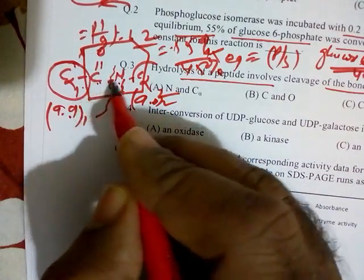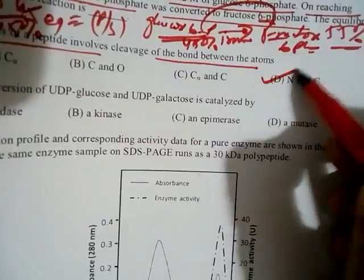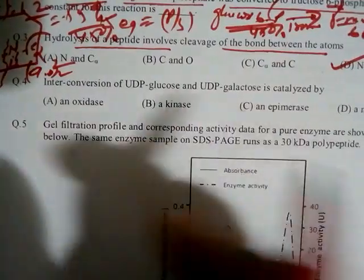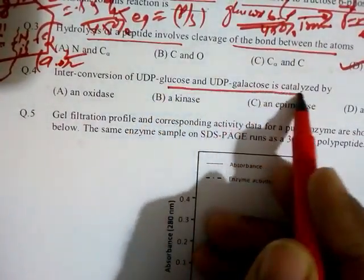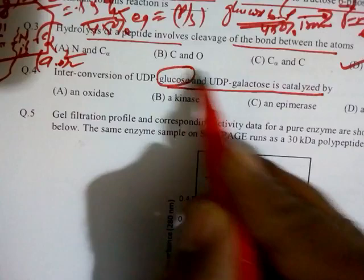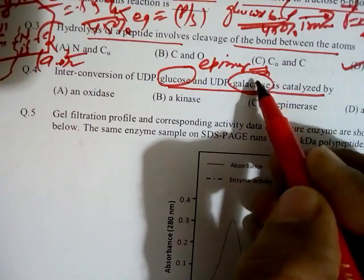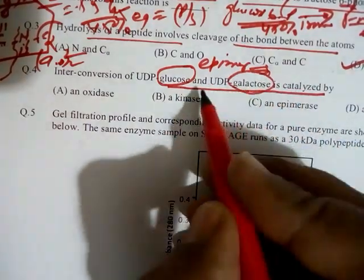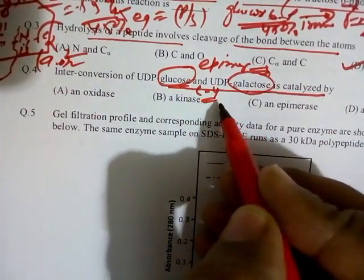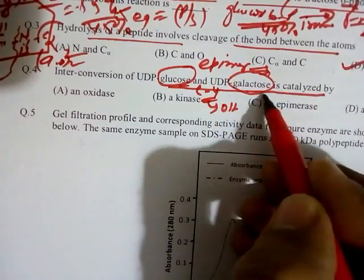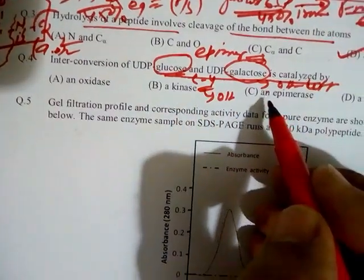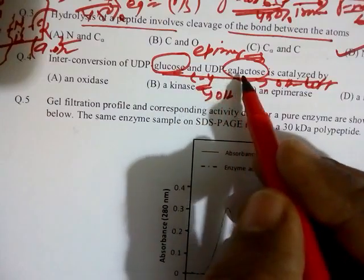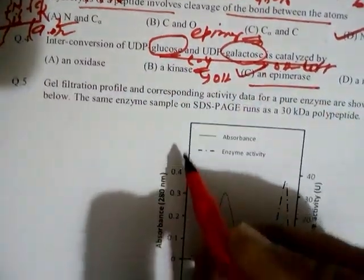Question four: The interconversion of UDP-glucose to UDP-galactose is catalyzed by which enzyme? Glucose and galactose are epimers — they differ in the orientation of the hydroxyl group at carbon-4. In glucose, the C4 hydroxyl is on the right; in galactose it is on the left. Since they are epimers, the enzyme required is an epimerase.